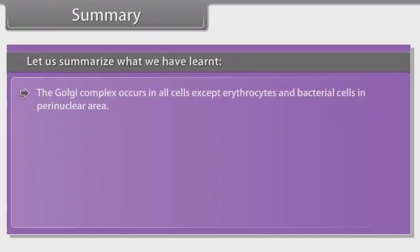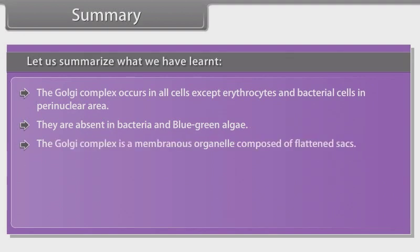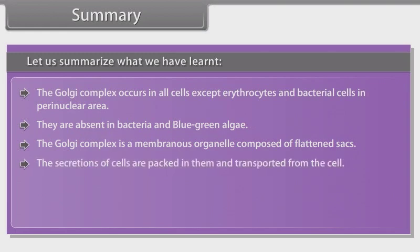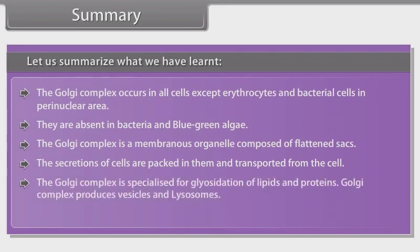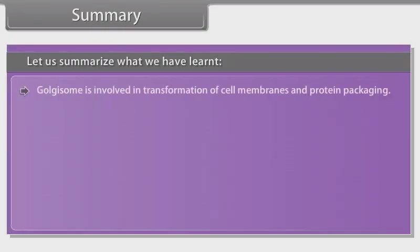The Golgi complex occurs in all cells except erythrocytes and bacterial cells, in the perinuclear area, and is absent in bacteria and blue-green algae. The Golgi complex is a membranous organelle composed of flattened sacs; the secretions of cells are packed in them and transported from the cell. The Golgi complex is specialized for glycosylation of lipids and proteins, produces vesicles and lysosomes, and is involved in transformation of cell membranes and protein packaging. The Golgi complex is the export house of the cell.